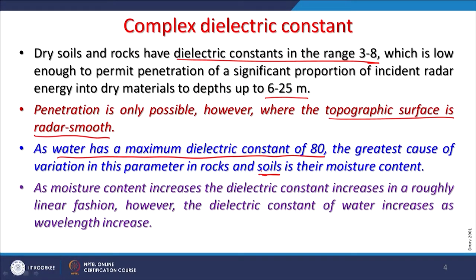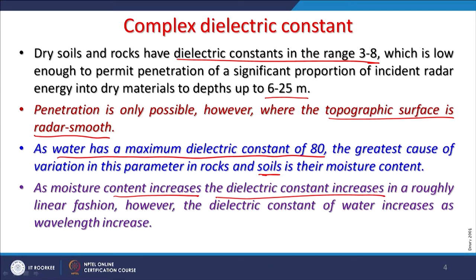Water has the highest dielectric constant — about 80 — and this is the greatest cause of variation in the parameters of rocks and soils based on moisture content. Soil at different depths may have different moisture conditions and therefore different dielectric constant values, leading to different recordings in radar images. As moisture content increases, the dielectric constant also increases in a roughly linear fashion, and the dielectric constant of water also increases as wavelength increases.